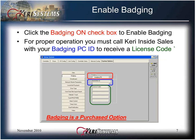The next option is badging. If you click on the Badging button, you will be able to check the Badging On checkbox to enable badging. For proper operation, you must call Cary Inside Sales with your badging PC ID number to receive a license code to be entered in the license code field. Badging is a fee-based feature that allows you to design, manage, and print photo ID badges. Badging is described in detail in its own training module.